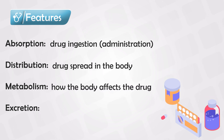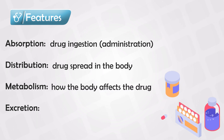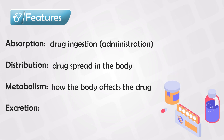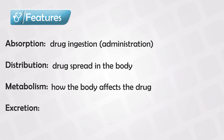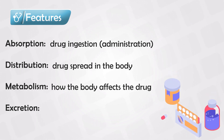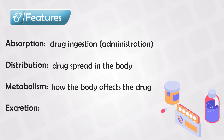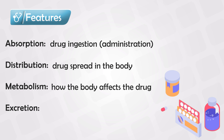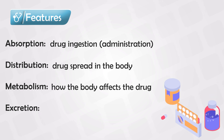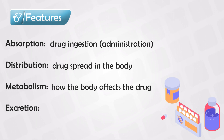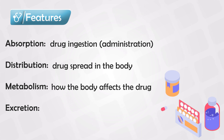Metabolism is how the body alters the drug itself. For example, we have an enzyme known as cytochrome P450, which can perform oxidation, hydrolysis, and reduction of the drug. We also have other enzymes that can perform more specific changes such as acetylation, sulfation, or conjugation.